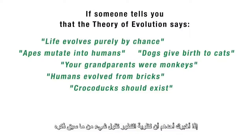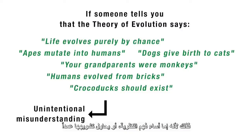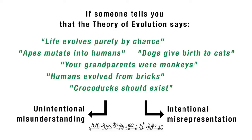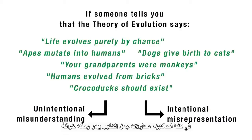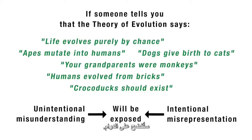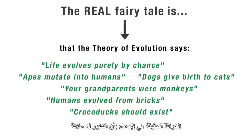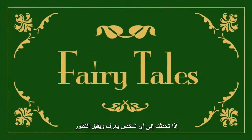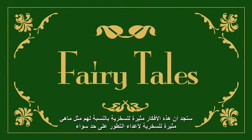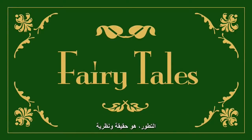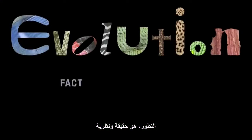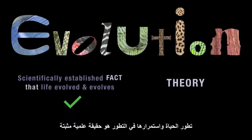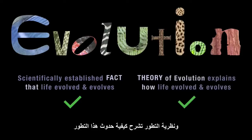If someone tells you that the theory of evolution says any of the common misconceptions discussed here, they either simply misunderstand it or are deliberately misrepresenting it, trying to create confusion about science in the hope of gaining more support for their position. Attempts to make evolution seem like a fairy tale — by both the misinformed and the dishonest — will continue to be exposed. The real fairy tale is the claim that evolution has anything to do with dogs giving birth to cats, individual animals morphing into other species, or organisms popping into existence through pure accident. Evolution is both a fact and a theory: it's a scientifically established fact that life evolved and continues to evolve, and the theory of evolution explains how it does so.